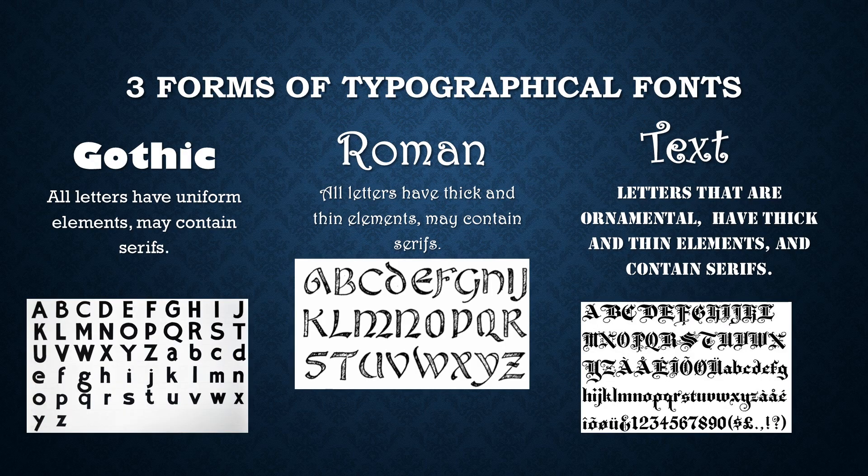There are three forms of typography: Gothic, Roman, and text. Gothic lettering is when all the lettering elements are uniform or have the same width. In Roman lettering all letters have thick and thin elements, meaning the letters change in their width. In textural lettering the letters are ornamental with thick and thin elements and they may contain serifs. Serifs are the little parts of the letters that go off at the end in the design.